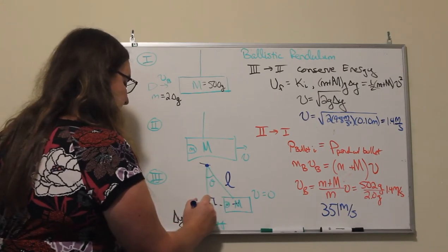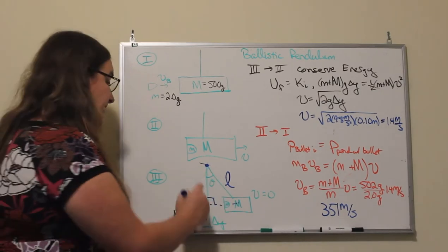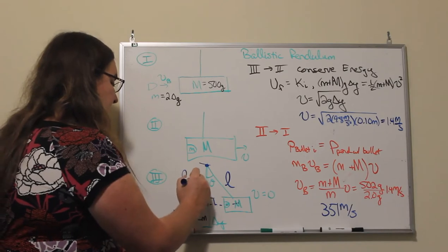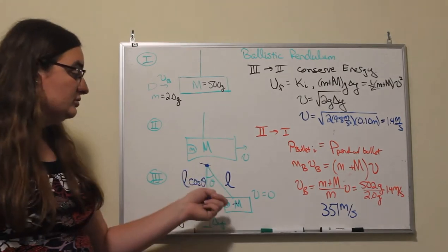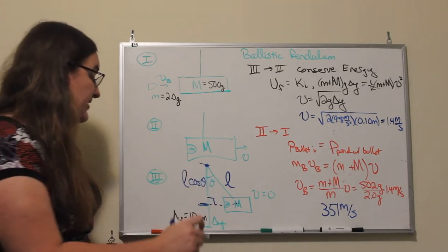This side right here is adjacent to the angle, so that would be the length of the pendulum times the cosine of the angle that the pendulum makes when it comes to rest.